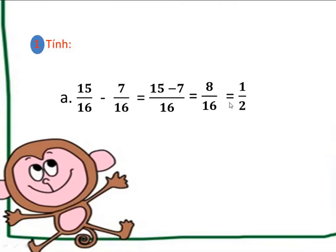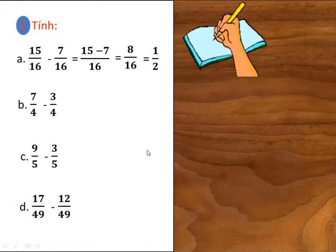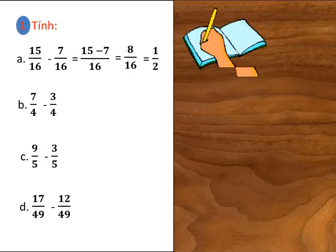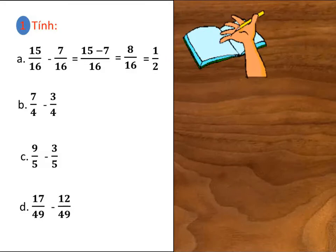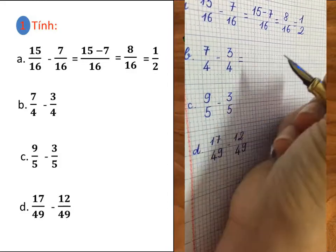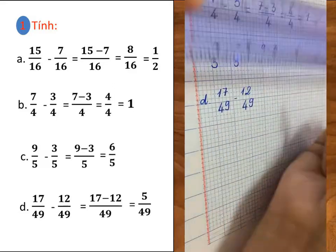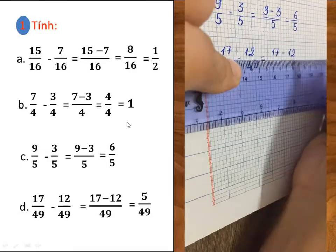Ta được kết quả cuối cùng bằng 1 phần 2. Các câu B, C và D các em làm tương tự và trình bày vào vở. Chú ý là khi trình bày, phải trình bày sạch sẽ và viết gạch ngang, chỉ gạch vừa đủ giữa tử số và mẫu số. Các em hãy đối chiếu kết quả bài làm của mình với đáp án nhé. Ở câu B, khi trừ ra kết quả là 4 phần 4, thì các em rút gọn lại bằng 1.